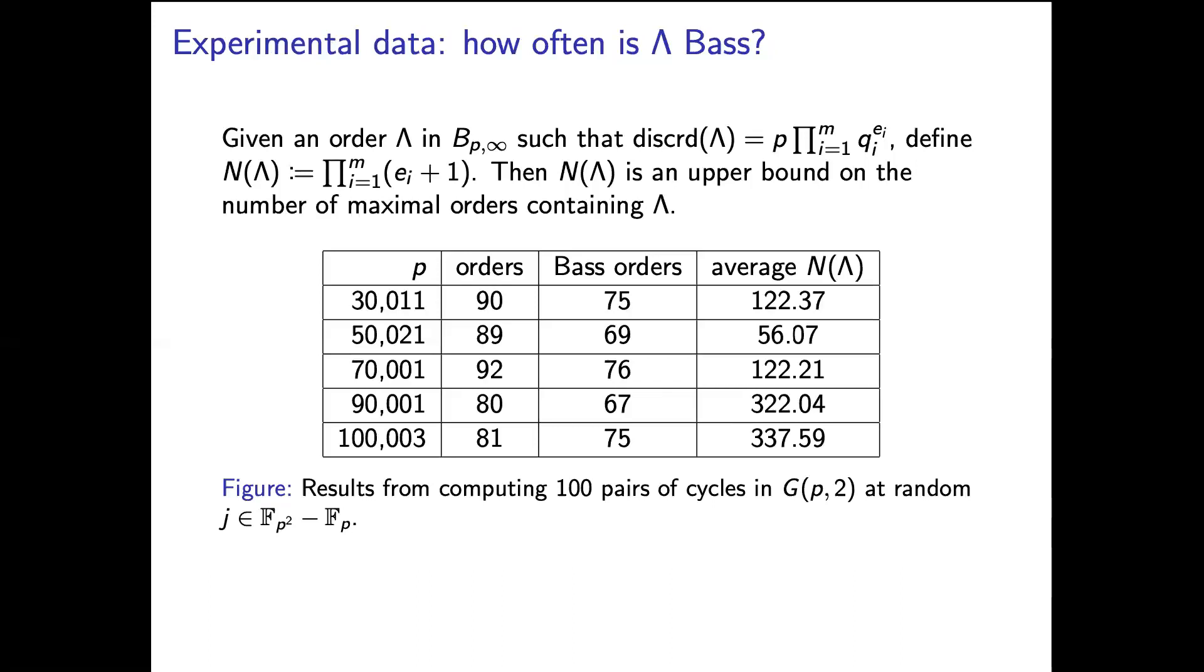So as I said, we introduced a new heuristic on the probability of computing a Bass order. So we ran some experiments to see how often this occurs. So here's what the experiment was. For each of these primes in this table, we computed 100 pairs of cycles at random j-invariants that are in F_{p^2} but not in F_p. The reason for restricting to those is those are the ones where Frobenius isn't non-trivial or Frobenius is just multiplication by p. So we don't know a non-trivial quadratic suborder. So we've recorded how often that pair of cycles gave us an order. We recorded how often that order was Bass. And we also computed this number n(Λ),